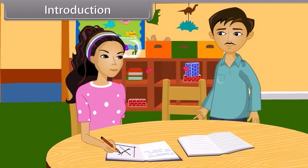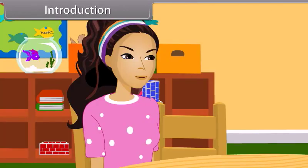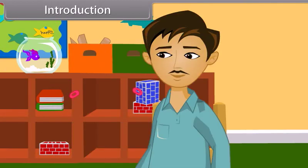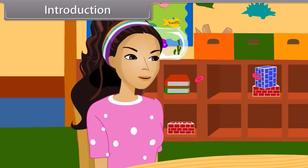Show me. What according to you is a tangent? This is tangent. Am I right, Dad? No, you are not. This is tangent and this is normal. The tangent is a straight line which just touches the curve at a given point. The normal is a straight line which is perpendicular to the tangent. Oh yes, I remember.